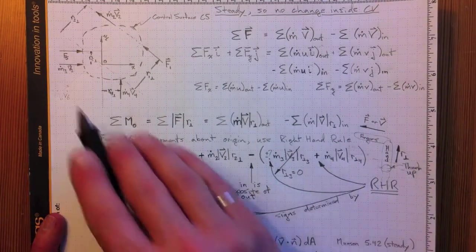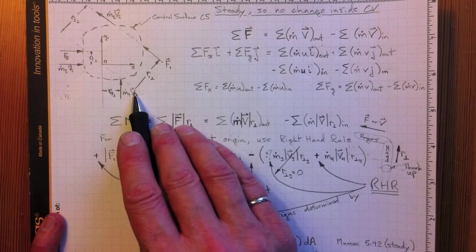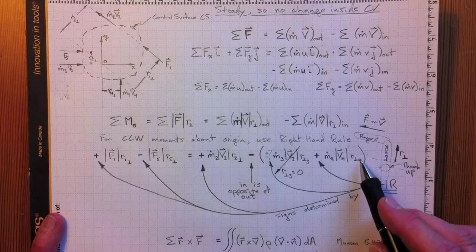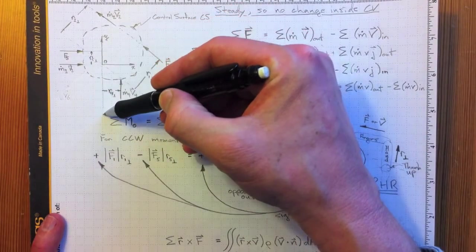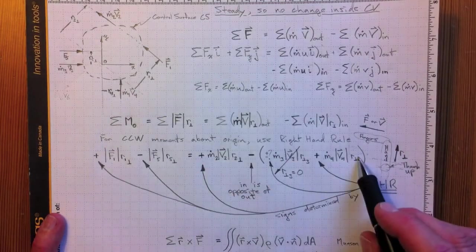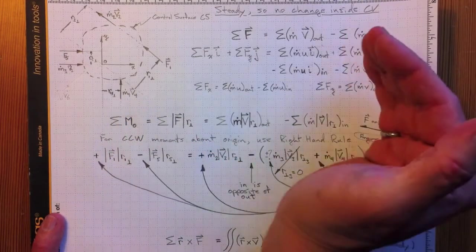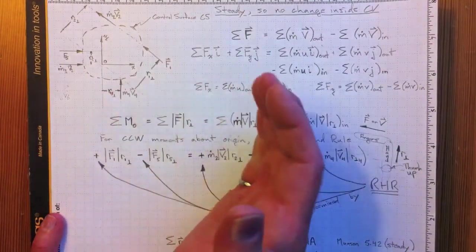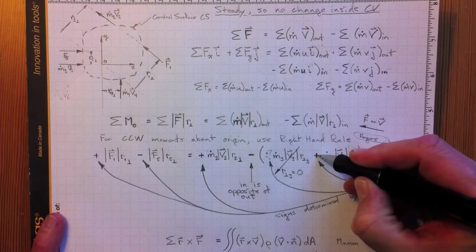Then we have this flow here going into the control volume, M dot 4 V4. So we've got M dot 4 magnitude of V4 times R perpendicular 4. There's the R perpendicular from a line that runs through the origin parallel to the flow. R perpendicular 4 times M dot 4 magnitude of V4. And if we line up with the right hand rule, hand in the direction of the radius, and fingers are in the direction of the flow, so that winds up being positive there by the right hand rule.